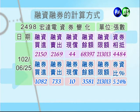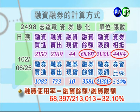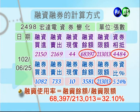以宏达电为例，102年6月25号当天融资余额是68,397张，融资限额是213,013张，融资使用率大概是32.10%。一般来讲，融资使用率如果高达60%甚至70%以上就是高融资的股票。高融资的股票只要整个市场趋势转空，这些股票往往都杀到见骨，所以走空头时对高融资使用率的股票要特别小心。